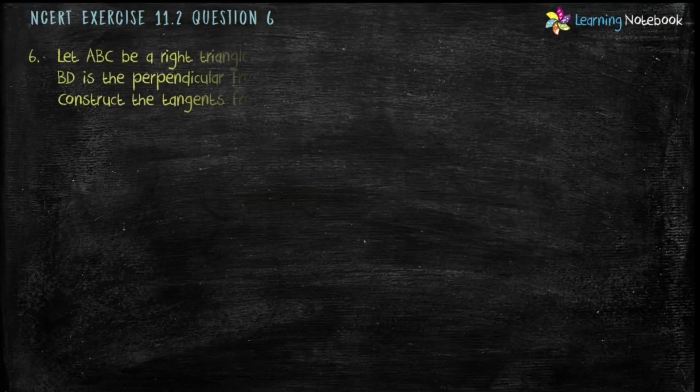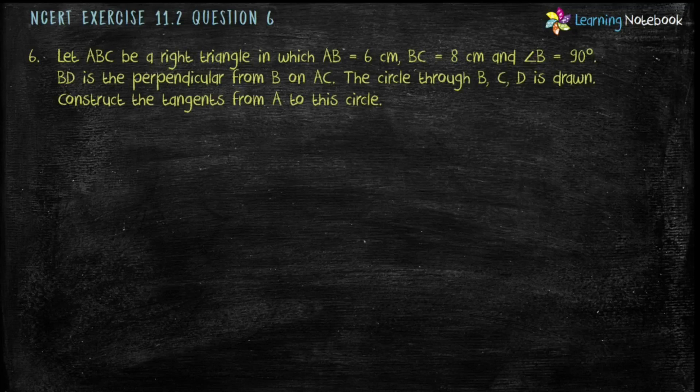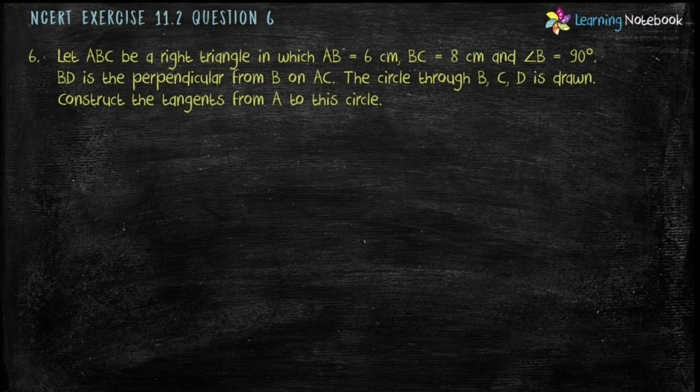Question is, let ABC be a right triangle in which AB equals to 6 cm, BC equals to 8 cm, and angle B equals to 90 degrees. BD is the perpendicular from B on AC. The circle through B, C, D is drawn. Construct the tangents from A to this circle.